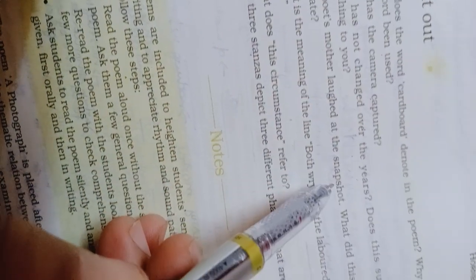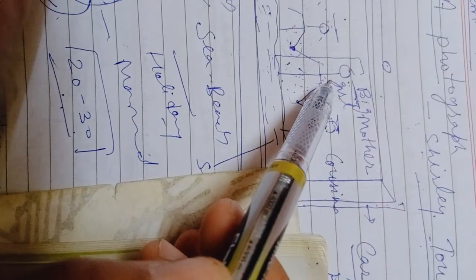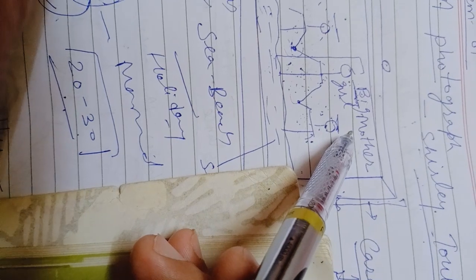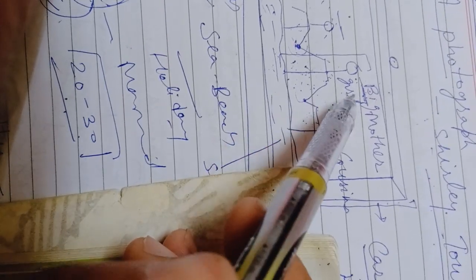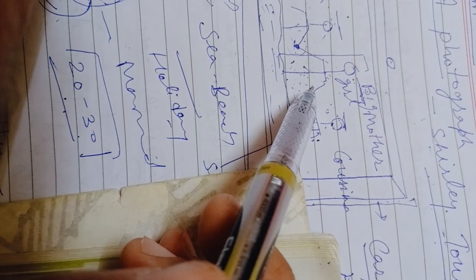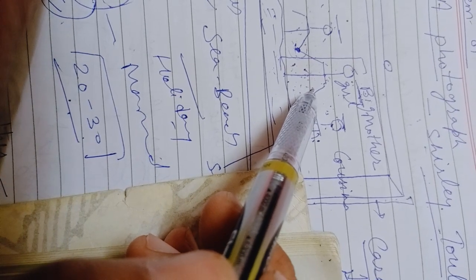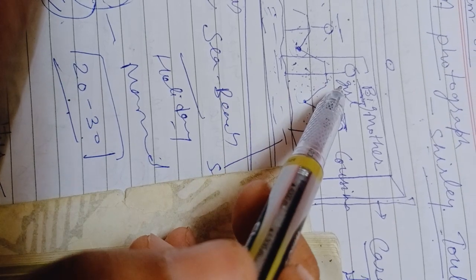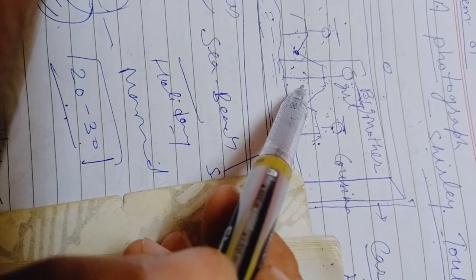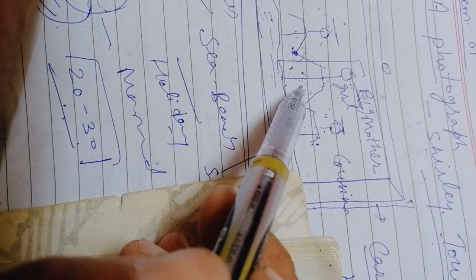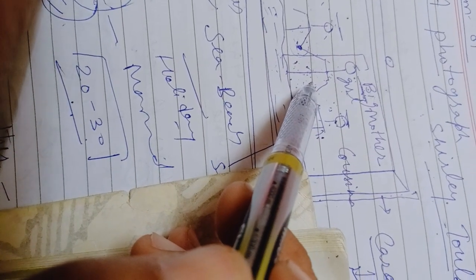Question number four: The poet's mother laughed at the snapshot. What did this laugh indicate? In this picture, the big girl, who is the mother of the poet, is smiling. So the answer will be: The mother laughed whenever she looked at the snapshot. After clicking the picture, whenever the mother got any opportunity to observe this picture, she started laughing. The sight reminds her of the pleasure of her childhood days. The scene of this picture reminds the mother of the enjoyment of her childhood days. She also feels amused that her parents had dressed them in a very good kind of dress, but with the changing of time they began to look funny and out of place.